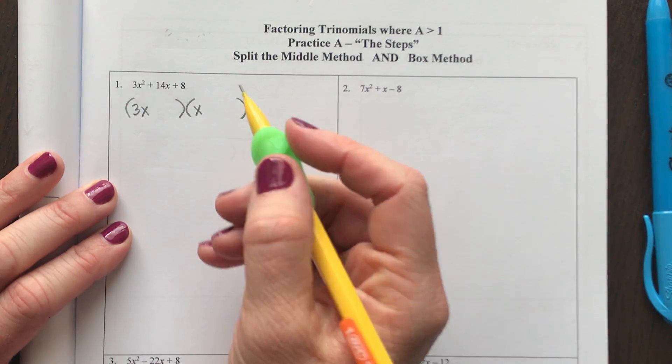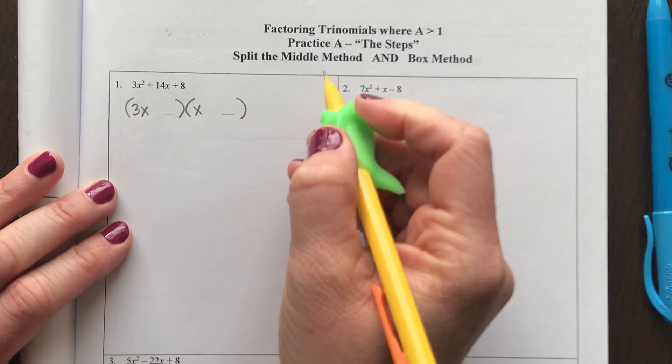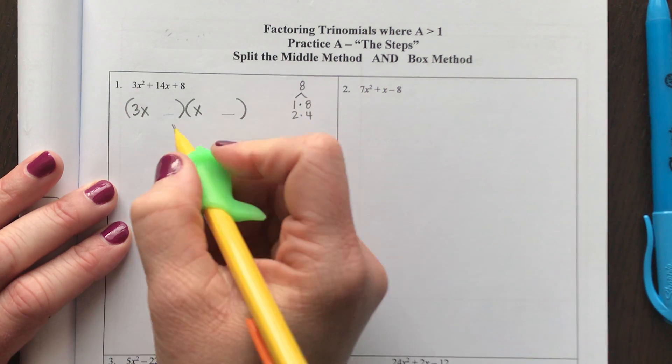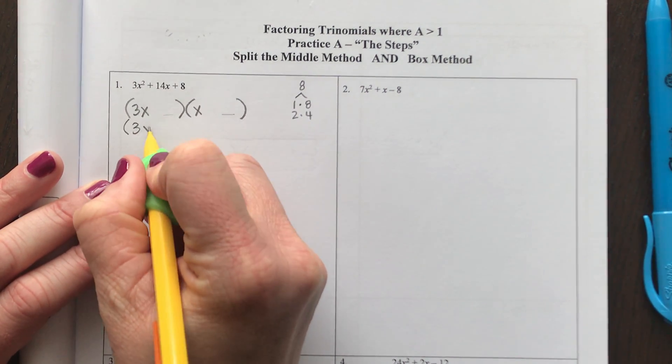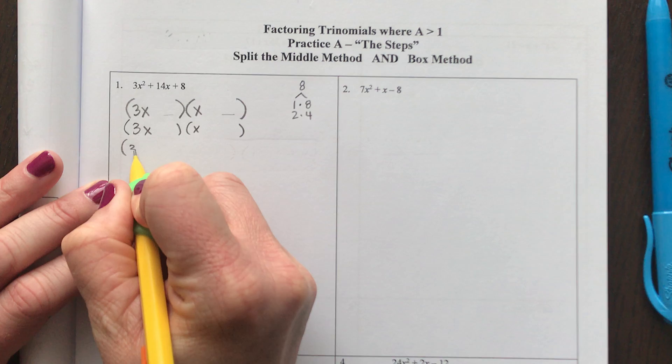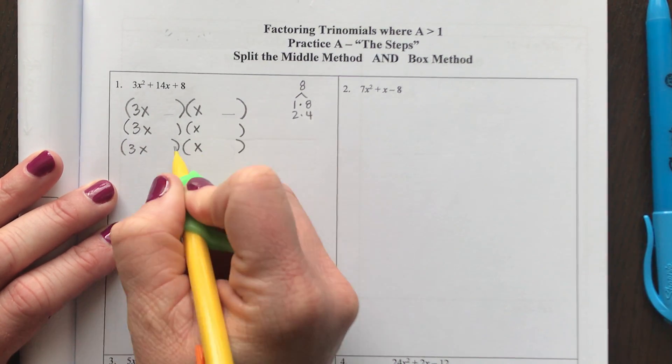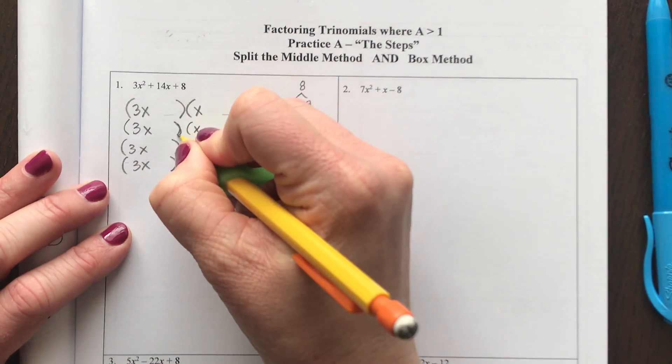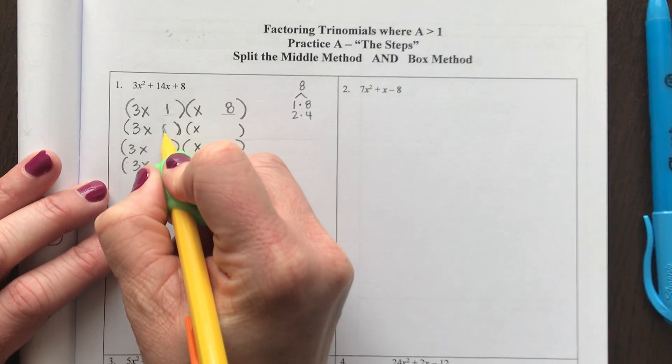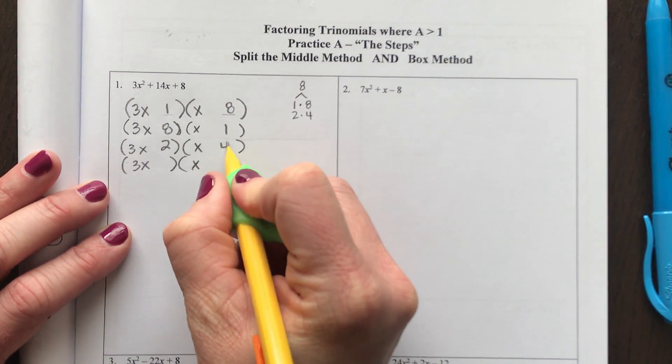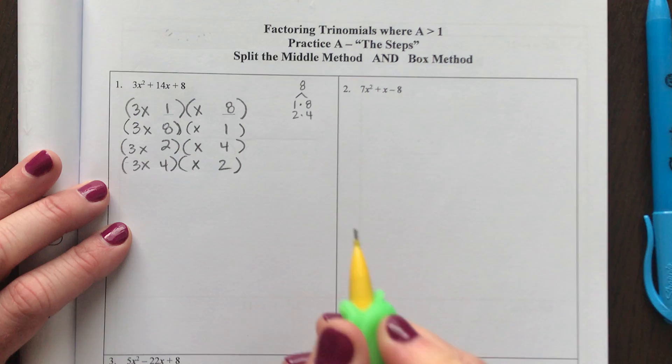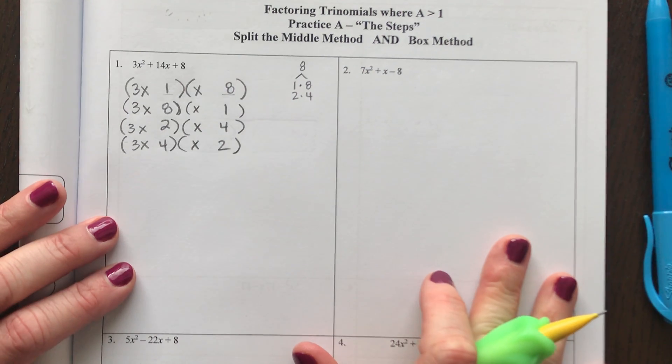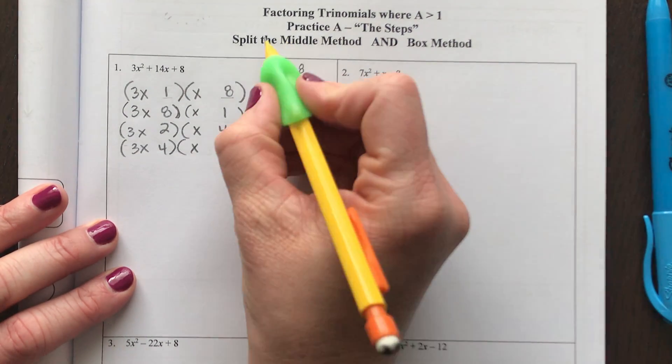Now factors that multiply to make 8 are going to go here in this spot, but numbers that multiply to make 8 would be 8 and 1 or 2 and 4. The question is: Is it 1 and 8? Is it 8 and 1? Is it 2 and 4? Or is it 4 and 2? Now without having to check all of those, I want to show you how to factor this polynomial without having to guess and check using what is called a split the middle method.